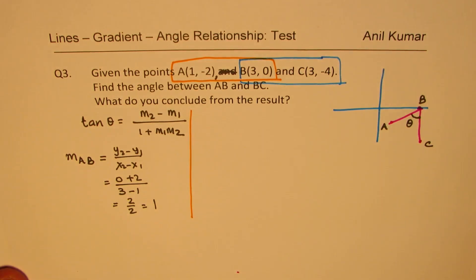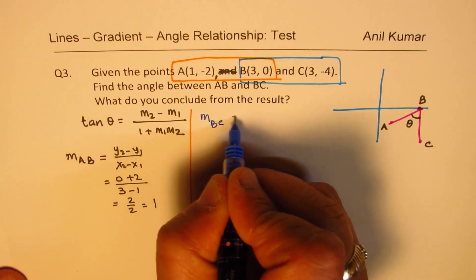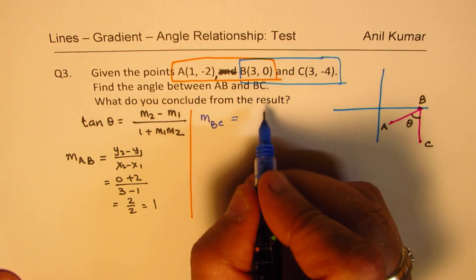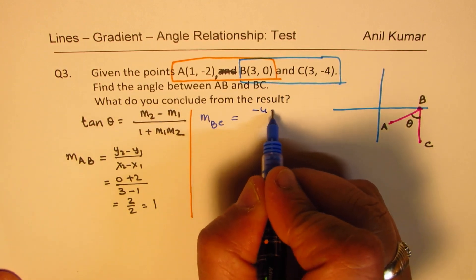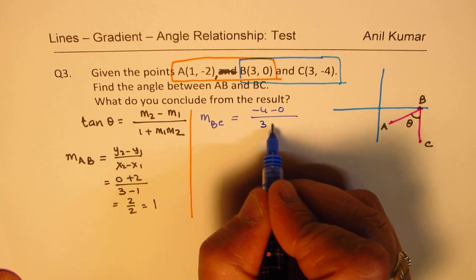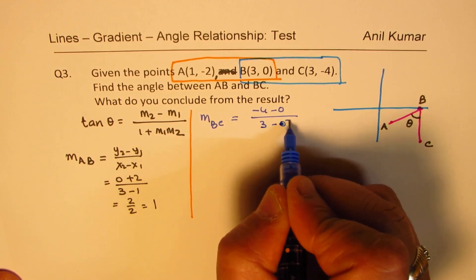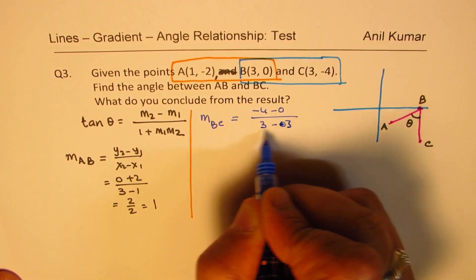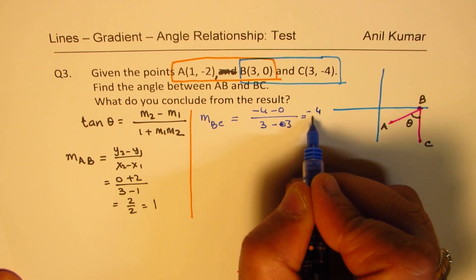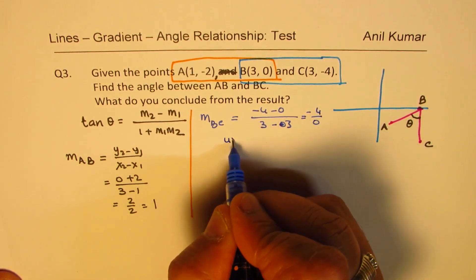The slope for BC is: minus 4 minus 0, divided by 3 minus 3. Now, 3 minus 3 is 0, so that is undefined.